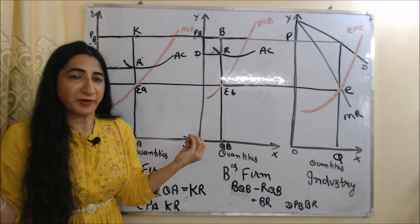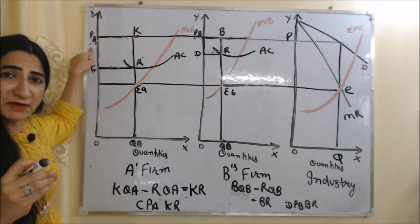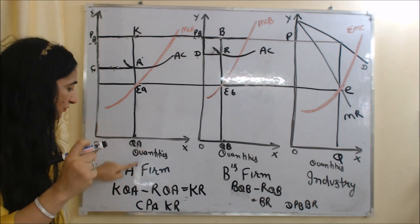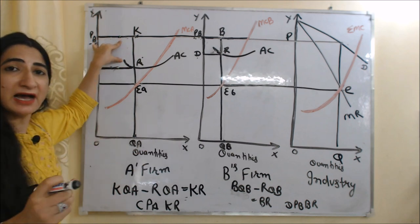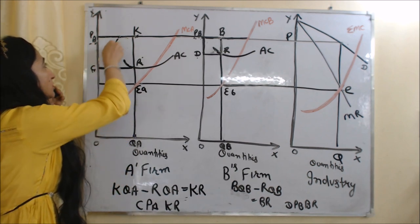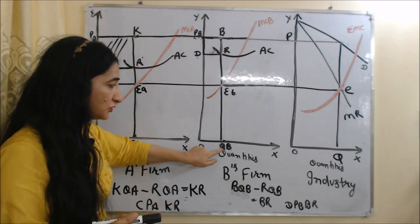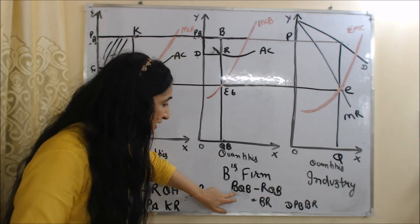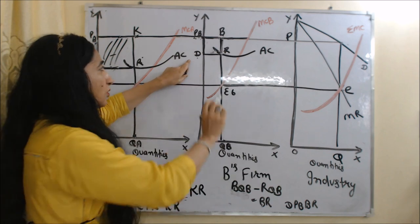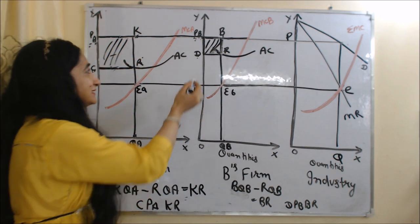Now we will see the profit of each firm. Firm A is charging price O-PA. At this price, average revenue of Firm A is K-QA and average cost is R-QA. Average revenue minus average cost equals profit, so K-QA minus R-QA equals K-R, which is the per unit profit of Firm A. K-R equals PA-C, so the total profit of Firm A is the area C-PA-K-R. For Firm B, average revenue is B-QB and average cost is R-QB, giving per unit profit B-R, which equals PB-D. So the total profit of Firm B is the area D-PB-B-R. Firm A is getting more profit than Firm B.